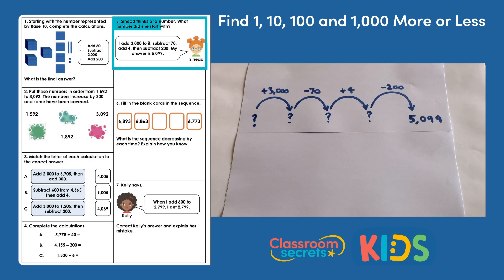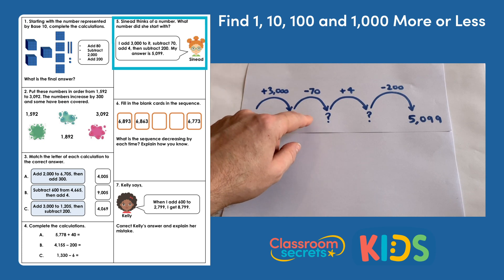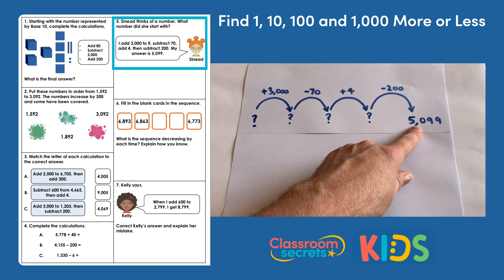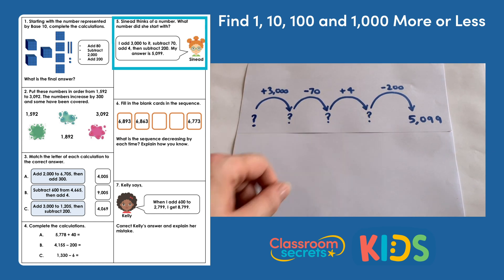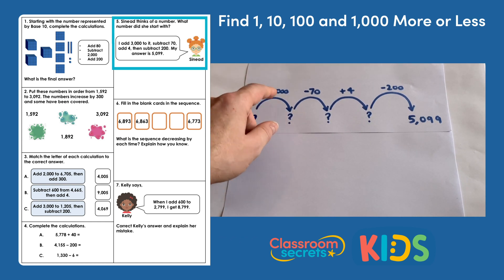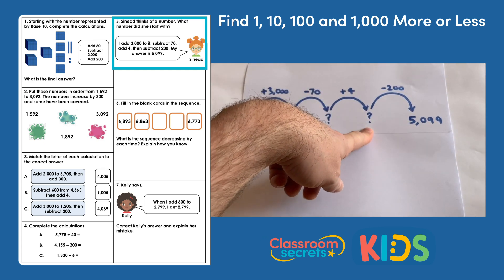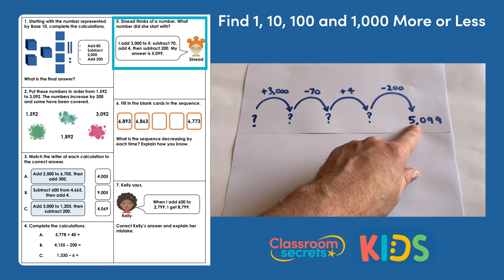Question 5: Sinead thinks of a number — what number did she start with? Sinead says she added three thousand to it, subtracted seventy, added four, then subtracted two hundred, and her answer is five thousand and ninety-nine. So she started with an unknown number, followed those calculations, and reached five thousand and ninety-nine. I've started with a question mark and gone through each step Sinead did to reach five thousand and ninety-nine.